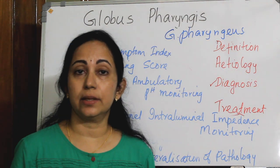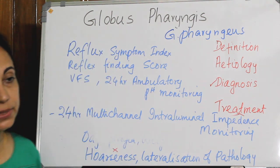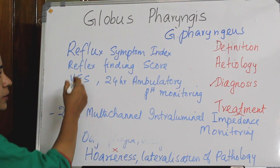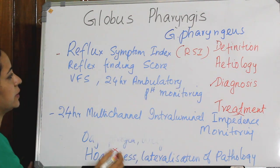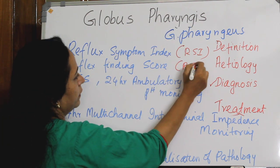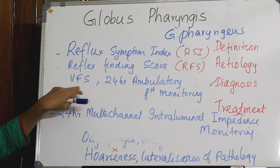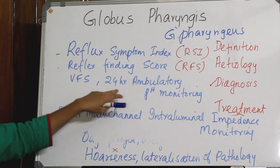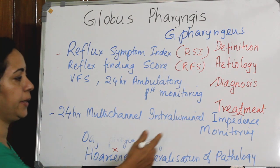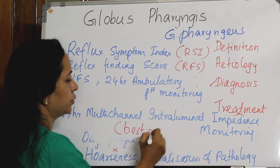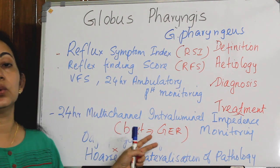Since Globus is highly associated with gastroesophageal reflux disease, if GERD is suspected, you can use a Reflux Symptom Index or a Reflux Finding Score. You may also perform video fluoroscopic swallowing study, 24-hour ambulatory pH monitoring, or 24-hour multichannel intraluminal impedance monitoring, which is the best method for detecting gastroesophageal reflux.